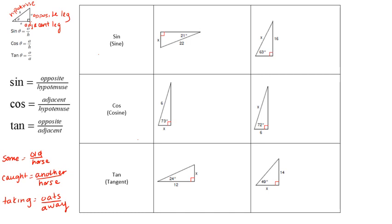We're going to practice using sine, cosine, and tangent, and we're going to put these into Desmos. Make sure your Desmos calculator is in degree mode — click the little wrench in the upper right-hand corner and select degree. Remember, this comes from similar triangles, so the sine of an angle is always the same ratio — opposite over hypotenuse — no matter how big or small your triangle is. If there's a 30-degree angle, those ratios will always be the same.